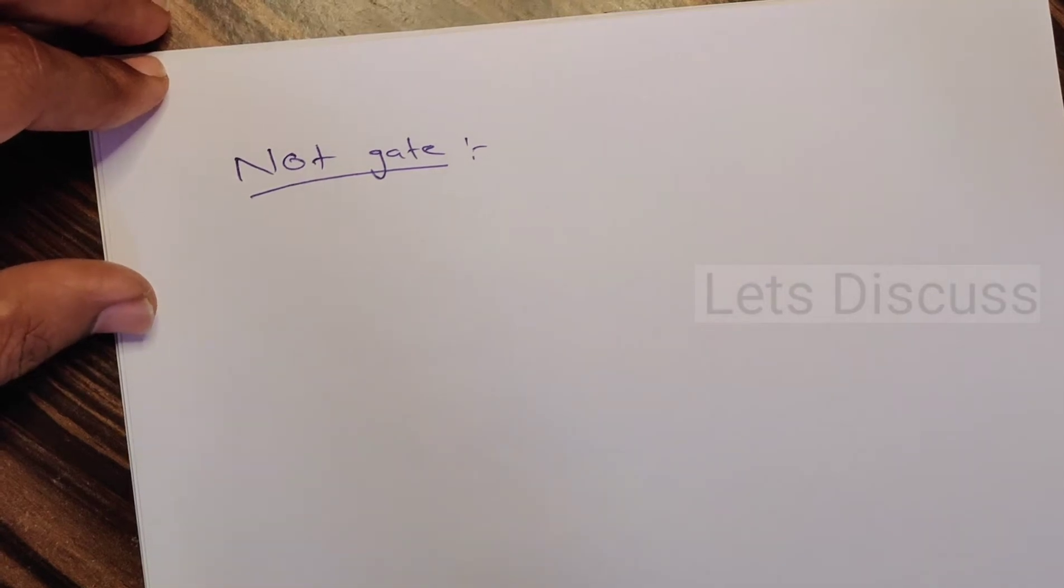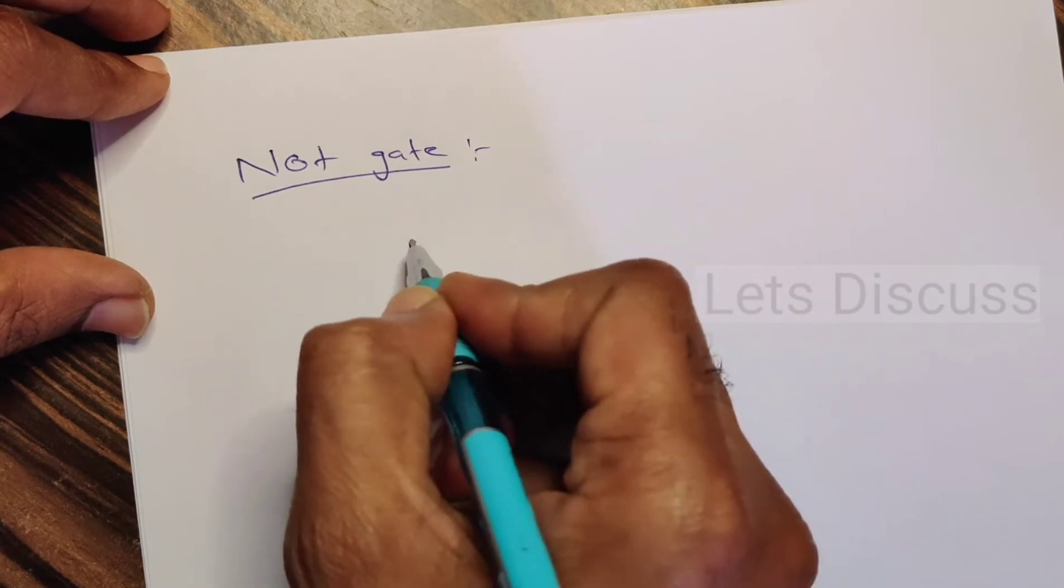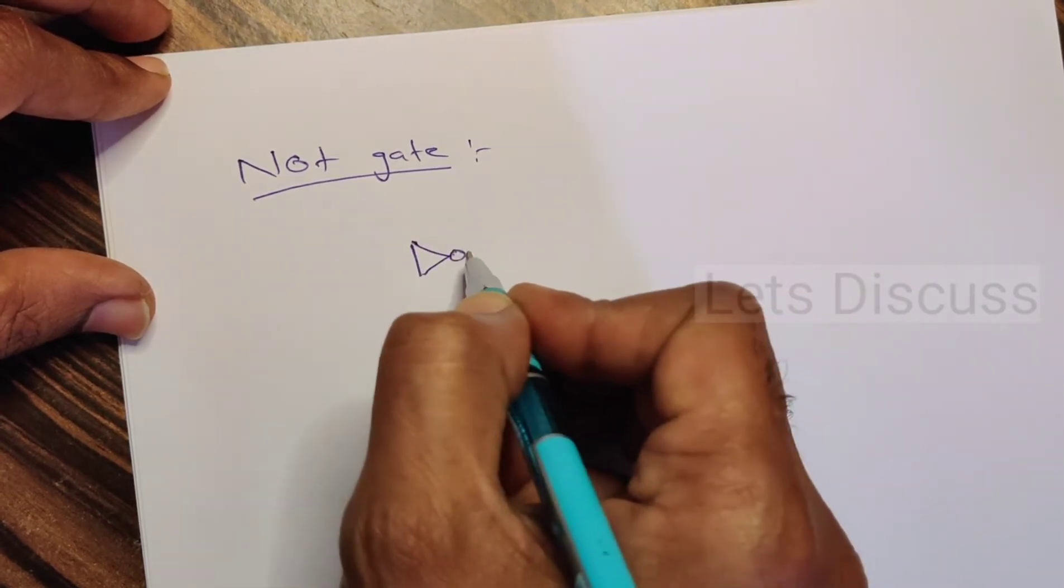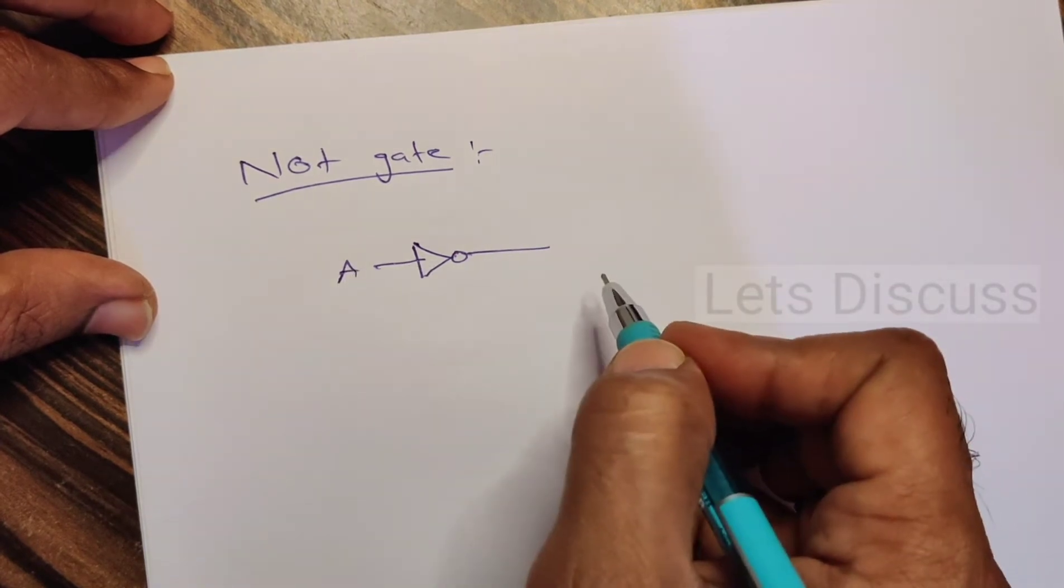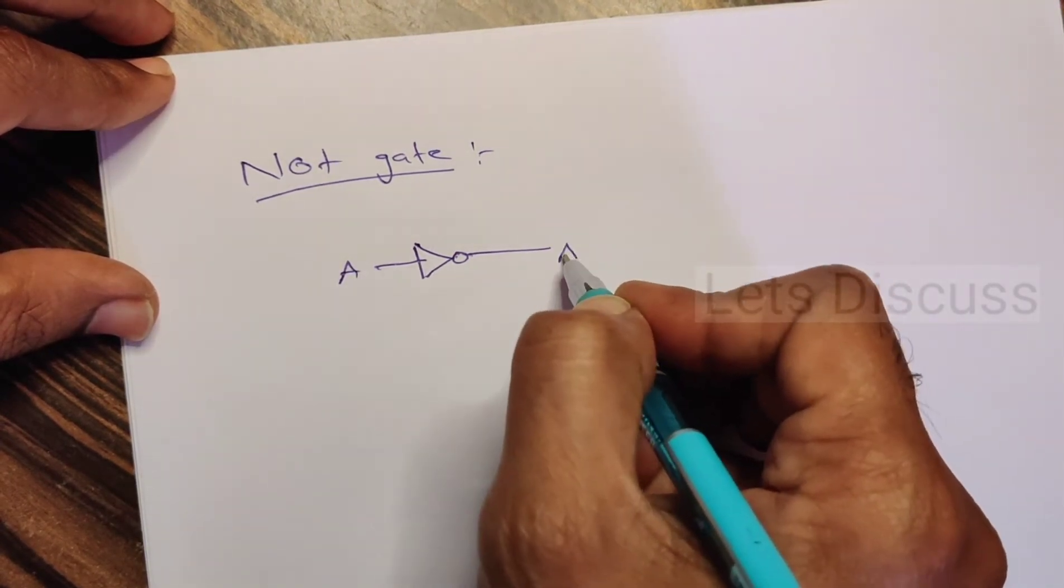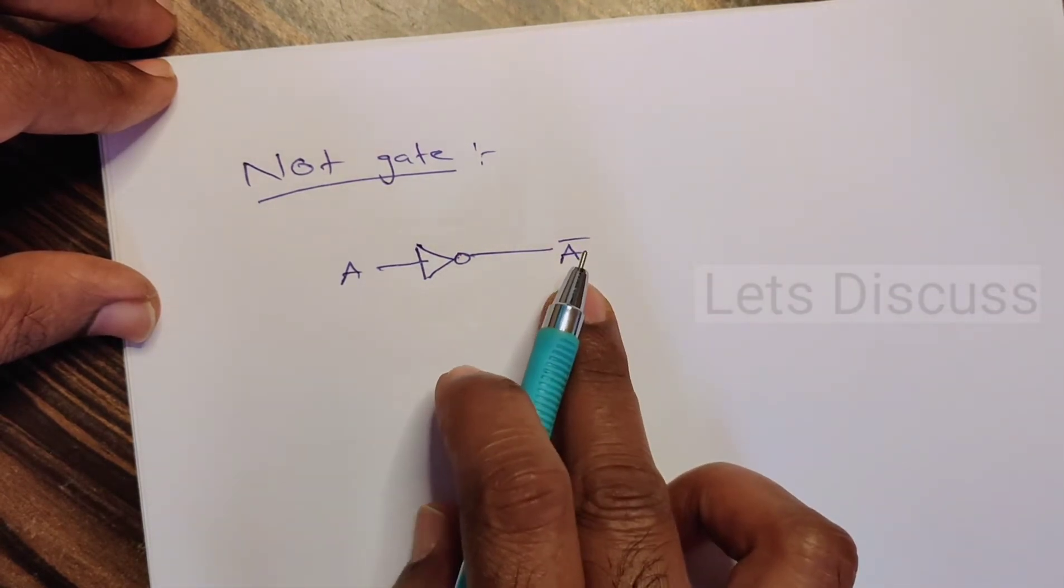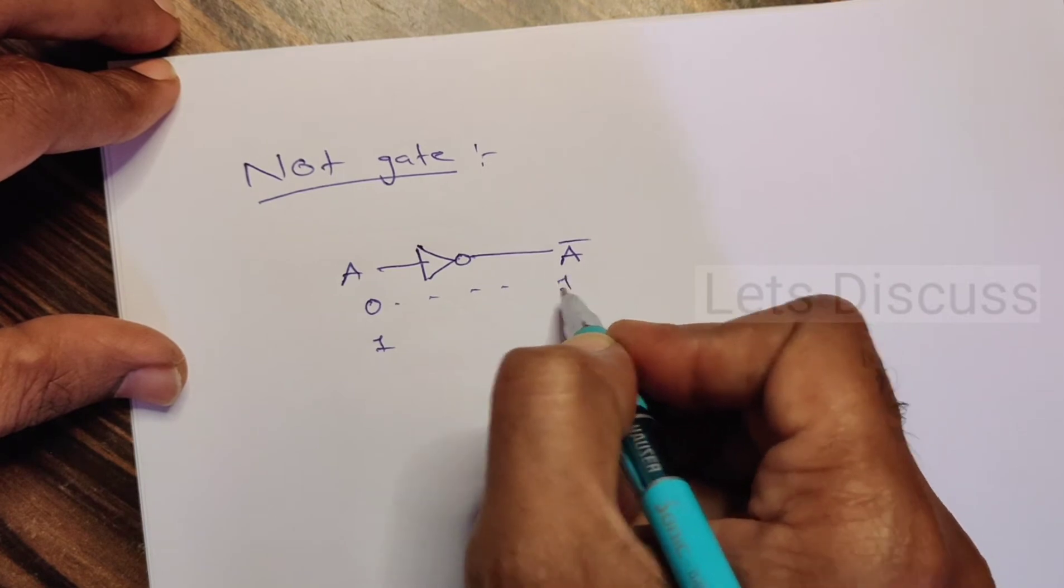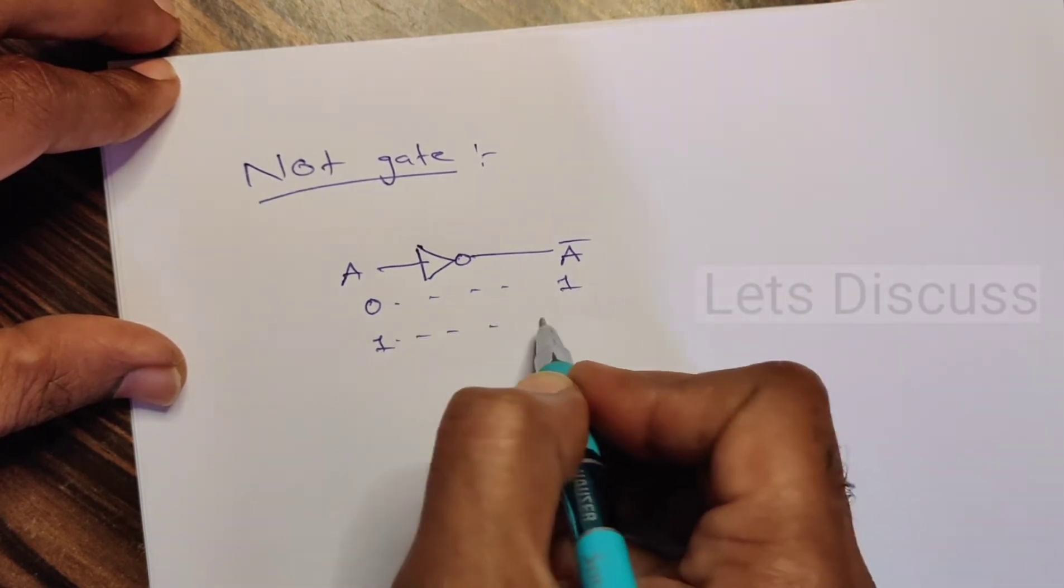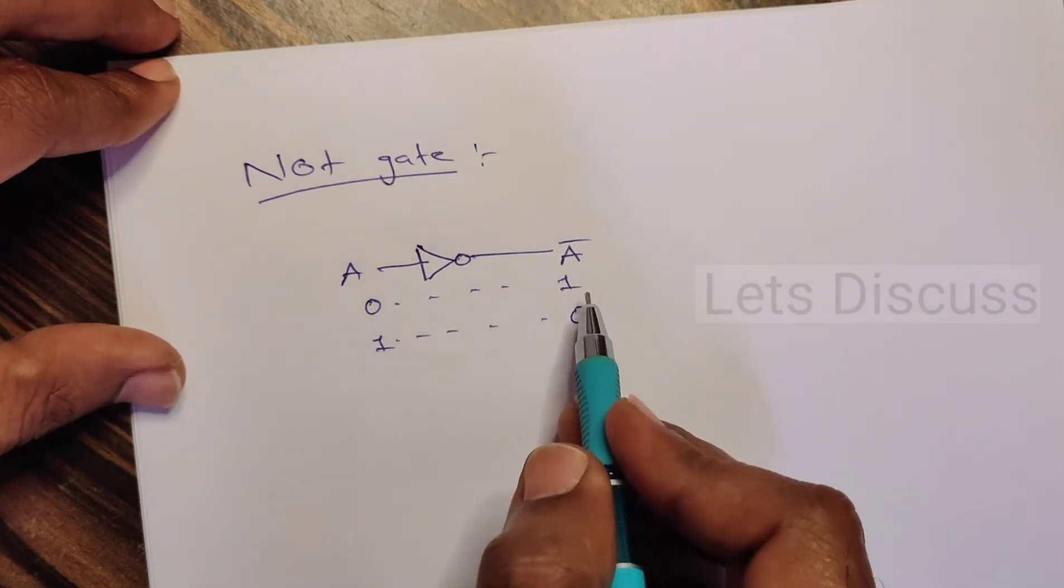Hi friends, let's discuss about NOT gate. This is the symbol of NOT gate. NOT gate has only one input and only one output. The output of the NOT gate is A bar. Feed zero, the output is one. If we feed one at the input, the output is zero. It's just the inversion of the input that we get at the output.